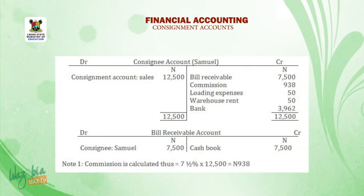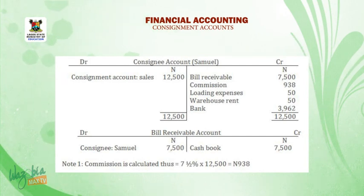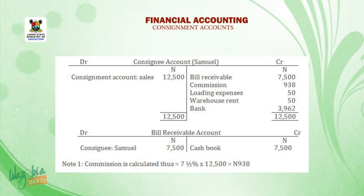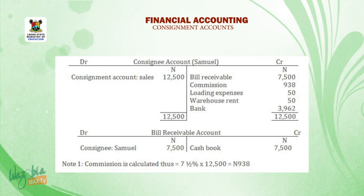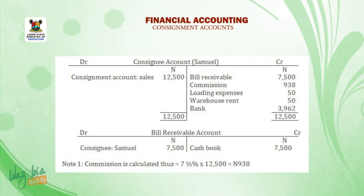Consignee account of Samuel: debit side — consignment account sales 12,500 Naira. Credit side — bills receivable 7,500 Naira; commission 938 Naira; landing expenses 50 Naira; warehouse rent 50 Naira; bank 3,962 Naira. Bills receivable account: debit side — consignee Samuel 7,500 Naira; credit side — cash book 7,500 Naira. Note 1: commission is calculated as 7.5% on sales of 12,500 Naira, giving 938 Naira commission.